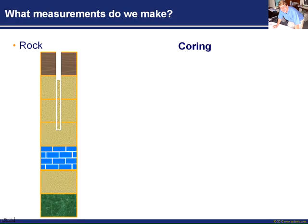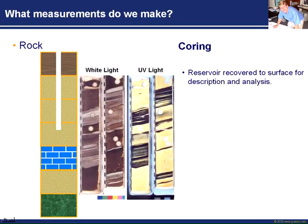We can take some core — we can actually take some of the rock from the reservoir in a core, a long cylinder of rock, and actually remove it, take it out of the reservoir, put it into the laboratory, and have a look at it under a microscope, and maybe even lay it out on a table and see what types of rocks we've got quite directly. So, coring — we recover it to surface.